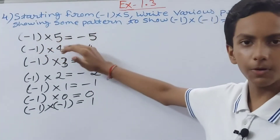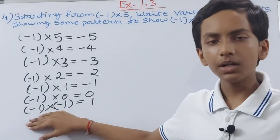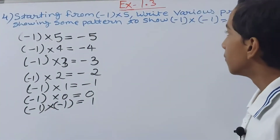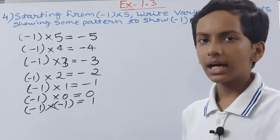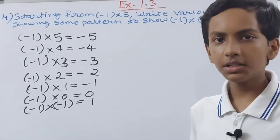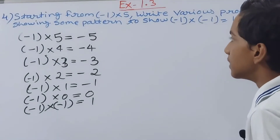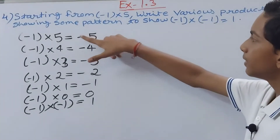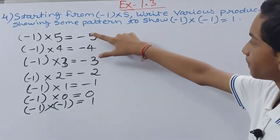Now, one more thing — we can also make other patterns here. Yes, we can. You can see we have our answer starting at -5, and we can identify various patterns within this sequence.